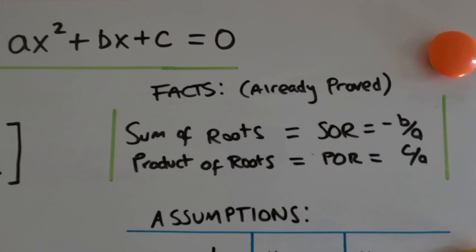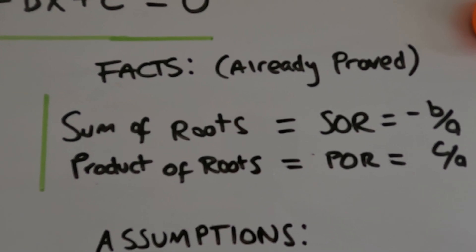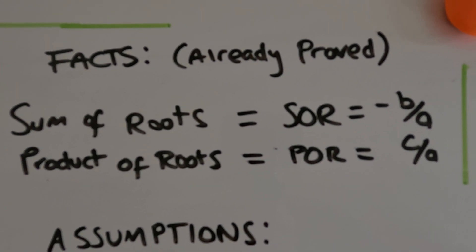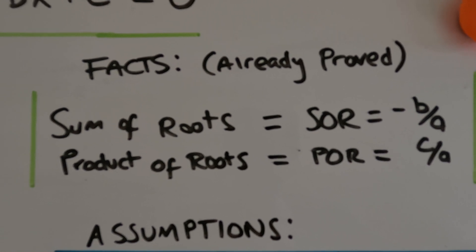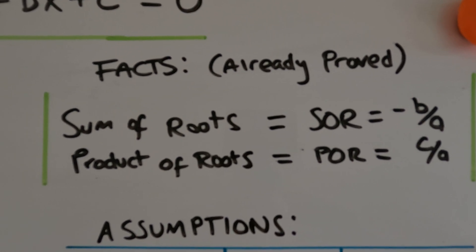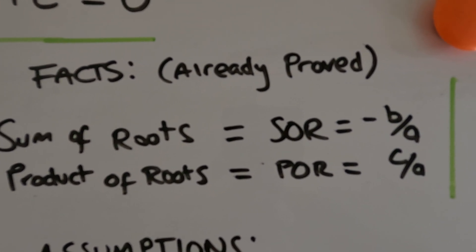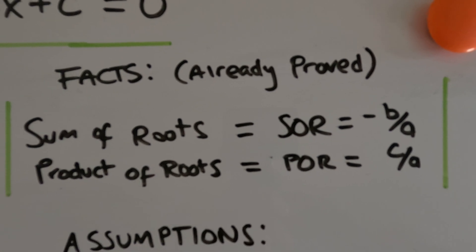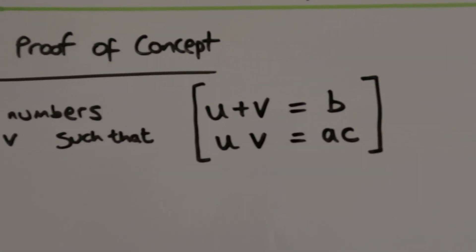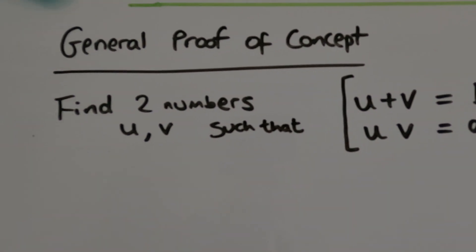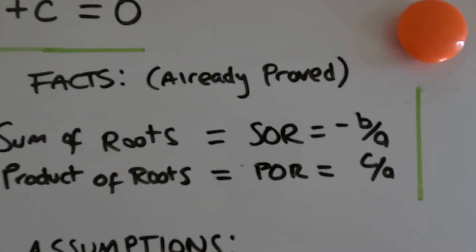So if you remember in some previous videos, you should know already that the sum of the roots is minus b over a — these are facts, we've already proved these. And the product of the roots is c over a. It doesn't matter about the method of factorization or anything like that; this holds.